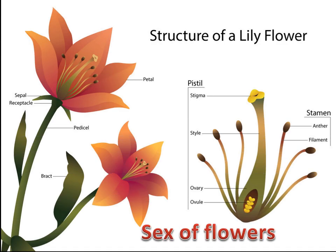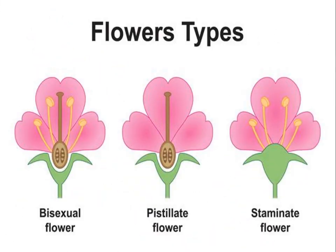Flowers are classified into two types: bisexual flowers and unisexual flowers. A bisexual flower, or hermaphrodite, carries both male and female reproductive organs, such as flowers of flax, tulip, petunia, and wallflower. A unisexual flower carries only a female or male reproductive organ, such as flowers of ponds, maize, and pumpkins.